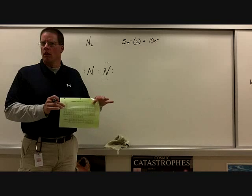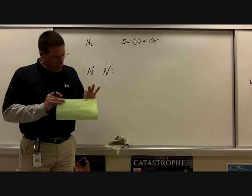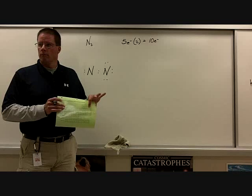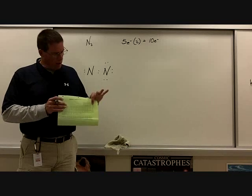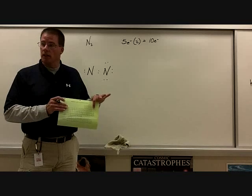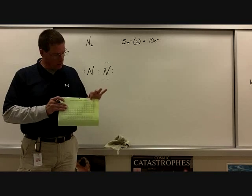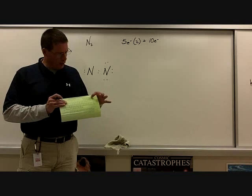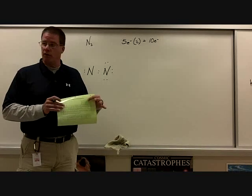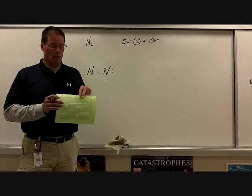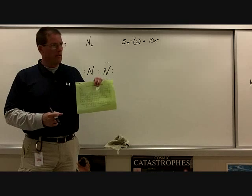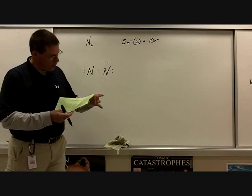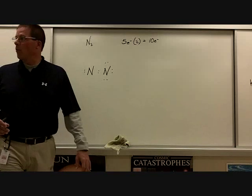Second-row elements — carbon, nitrogen, oxygen, fluorine — can never have more than eight electrons because they have no d-orbitals. However, third-row elements like phosphorus, sulfur, and chlorine do have d-orbitals, so as central atoms they can have more than eight electrons. That's why we can have expanded octets for phosphorus and sulfur but not for nitrogen.